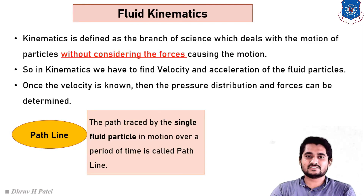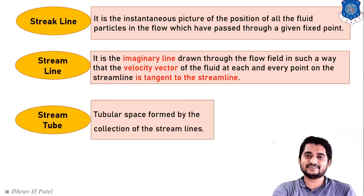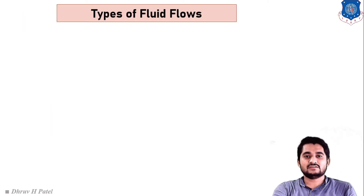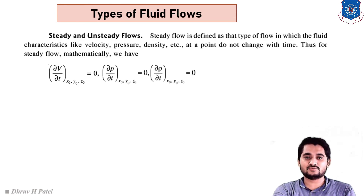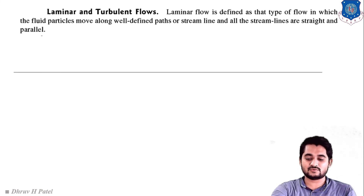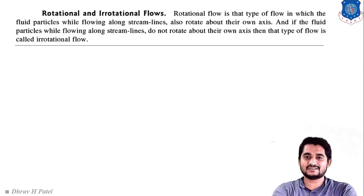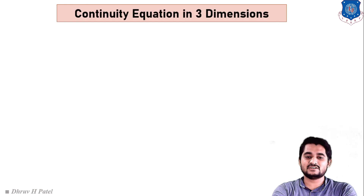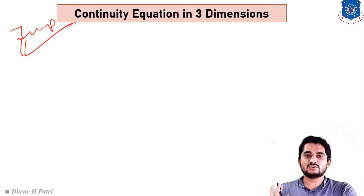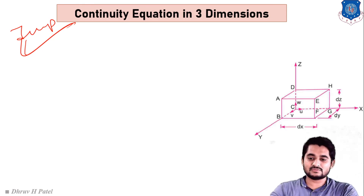Let us revise the main points of this chapter. First we learned fluid kinematics, then path line, stroke line, stream line, and stream tube — all of which are used in ANSYS or any other analysis software. Then we understood types of fluid flows: steady/unsteady, uniform/non-uniform, laminar/turbulent, compressible/incompressible, rotational/irrotational, and one/two/three dimensional flow. One of the most important topics is the continuity equation in three dimensions — to derive it you find mass flow rate from the x direction.